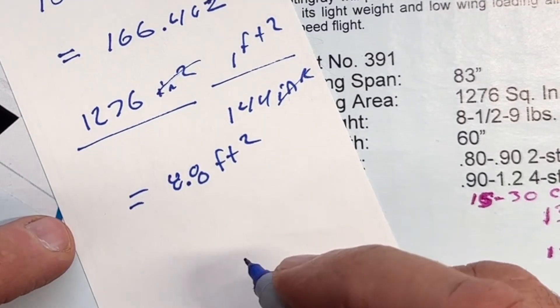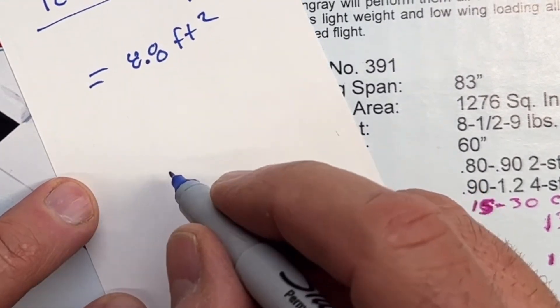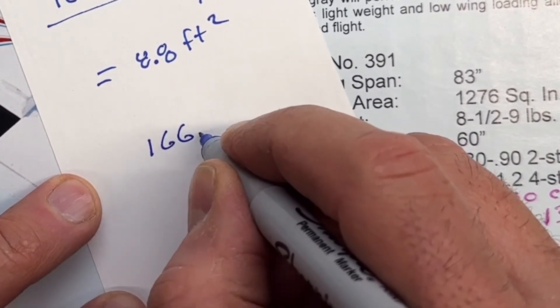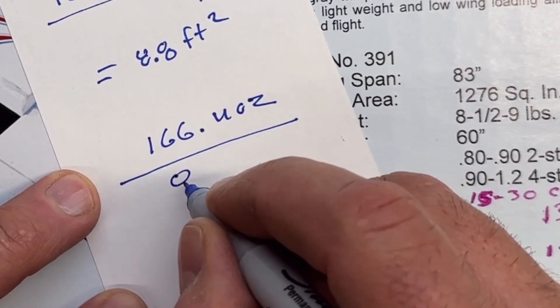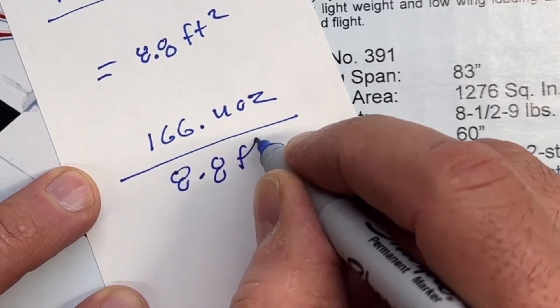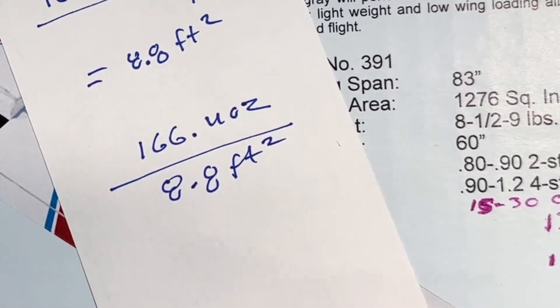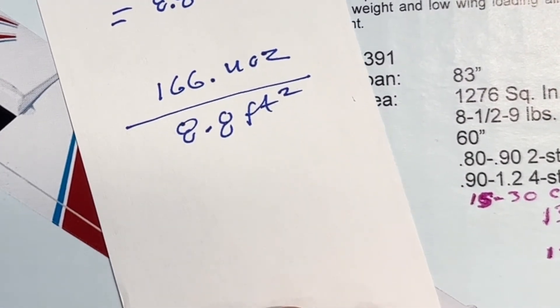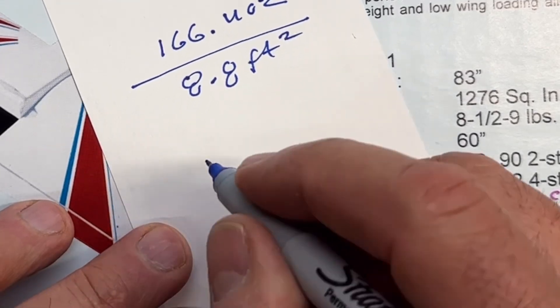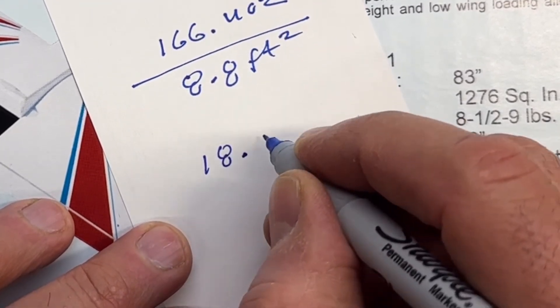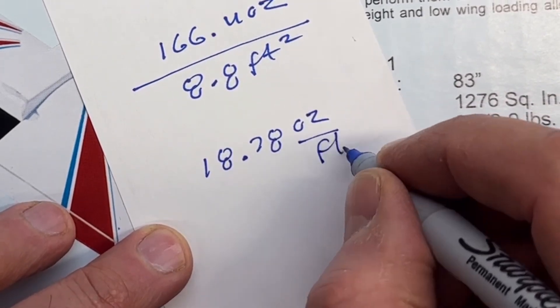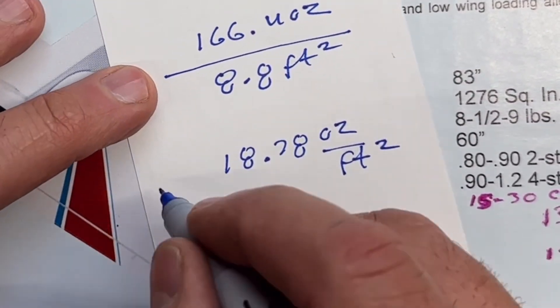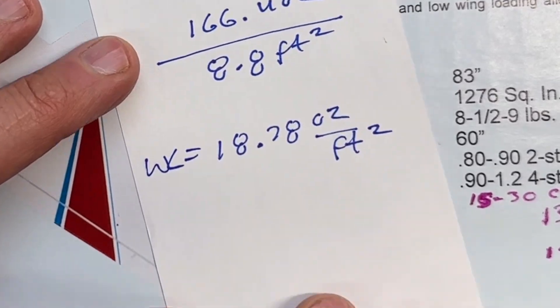And then we're going to go ahead and divide now the weight, which is going to be 166.4 ounces divided by 8.8 feet square. And again, I already did the math and that comes out to 18.78 ounces foot square for our wing loading.